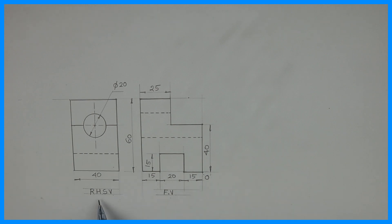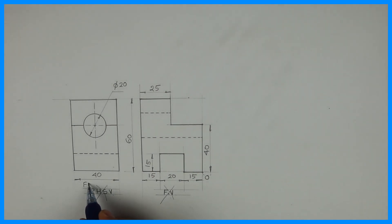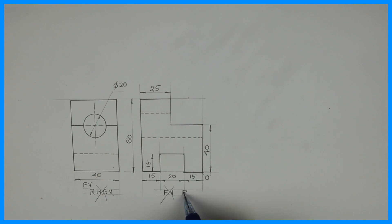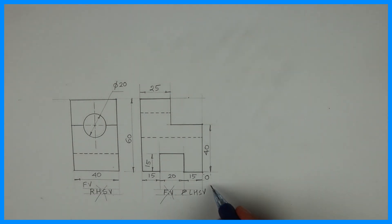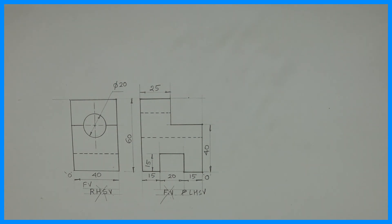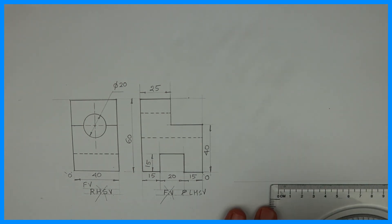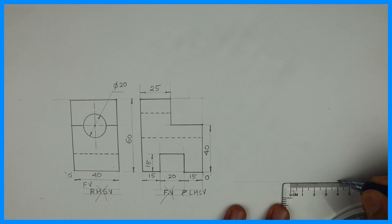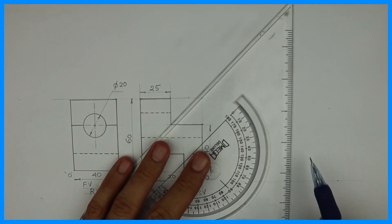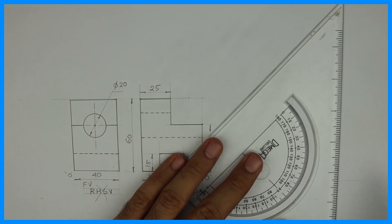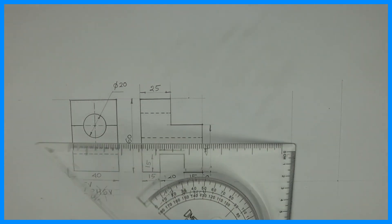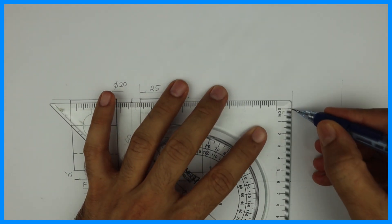Remember: this is the front view, this is the right-hand side view, and in the right-hand side view there is a circle. So what we will do is interchange this — we can make this the front view and now this will become the left-hand side view. In first angle projection, the origin will always be on the extreme left or extreme right. So first we will take length which is 40 and height is 60. Always remember, whenever you have a circle in the side view, that view will become the front view.